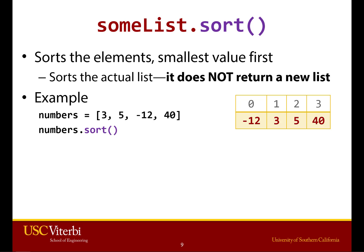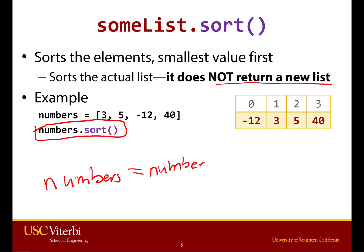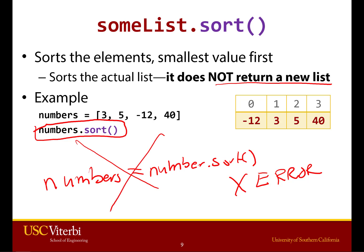Now what's really important is that this does not return a new list. So the correct syntax is numbers.sort — that will mean that numbers is now correctly sorted. The syntax that is not correct would be numbers equals numbers.sort. This is an error. It's not actually going to give you an error message, unfortunately — it's going to give you something called None, which will be very confusing. So realize this is incorrect. You simply say numbers.sort. This is an example of a function that doesn't return a value; it simply changes the list in place.